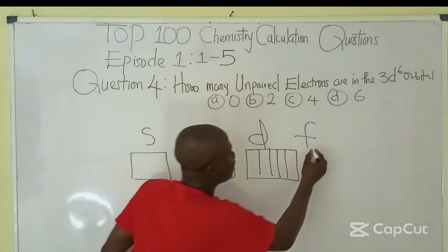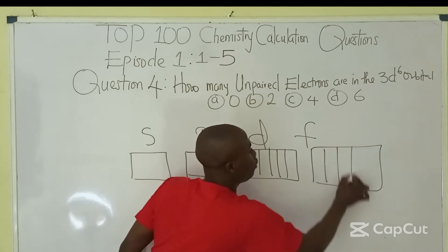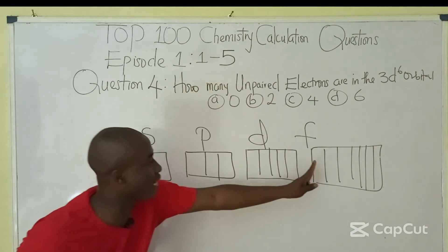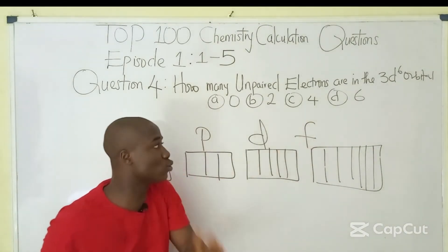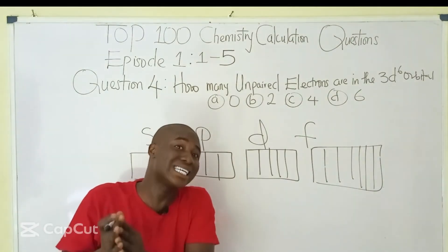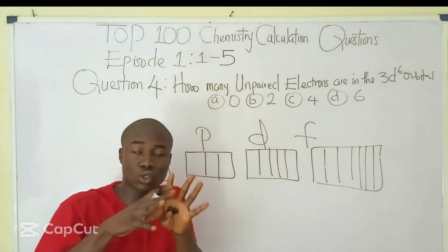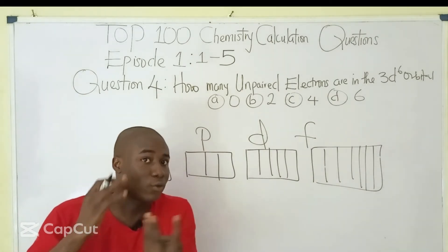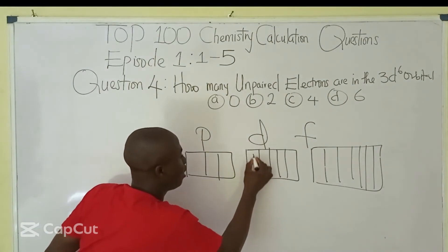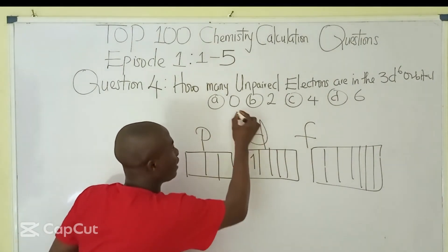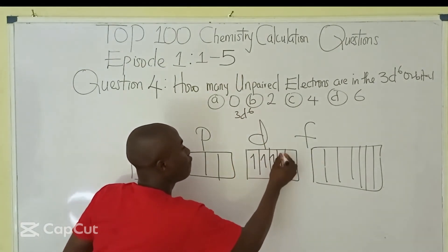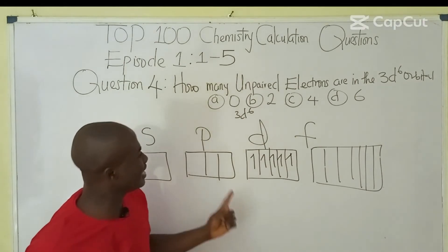For the F orbital we draw 7 boxes. In this question, they ask how many unpaired electrons are in the 3D6 orbital. According to Hund's rule, you fill electrons singly before pairing takes place. So with 5 boxes for the D orbital and 6 electrons, we fill all 5 boxes singly first — that's 5 electrons placed.